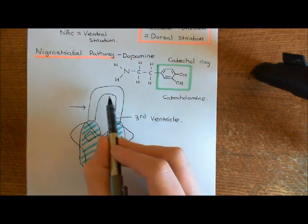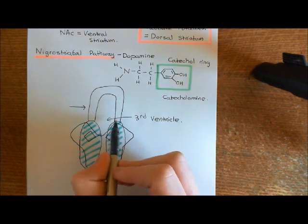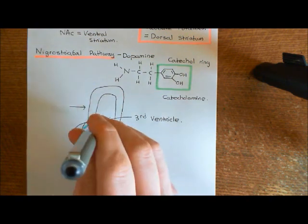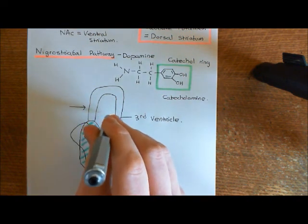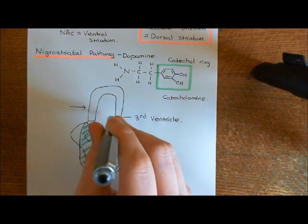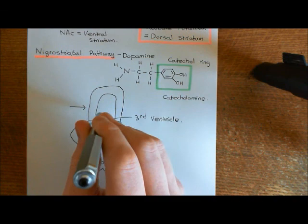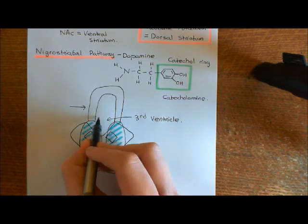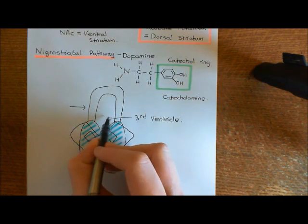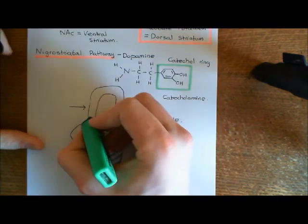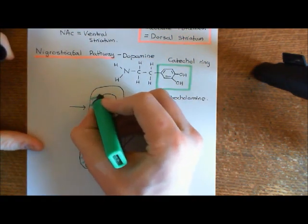Not only does the hypothalamus make up the lateral walls of the third ventricle, but it also makes up the floor of the third ventricle. So if you were a little man standing in the third ventricle, what you'd be standing on is the floor of the hypothalamus. The mammillary bodies would be down here, projecting downwards onto the basal surface of the brain. This is all the hypothalamus — we'll colour it in green.